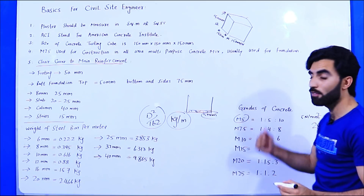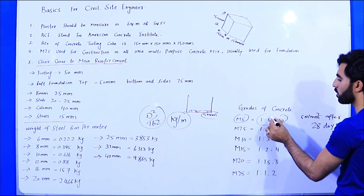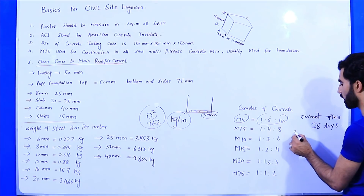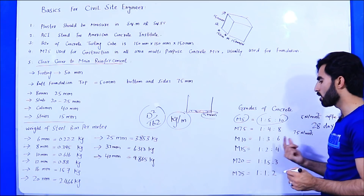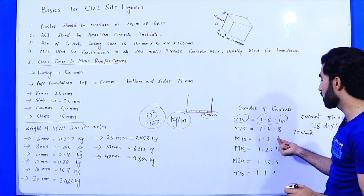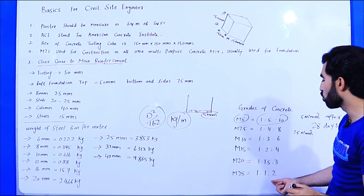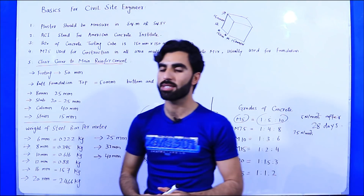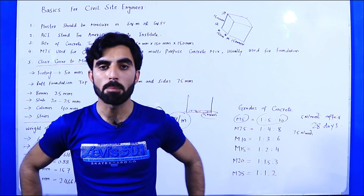To achieve a compressive strength of 5 N/mm² after 28 days (M5), the mix ratio is 1:5:10 — one part cement, five parts sand, ten parts crush. For M7.5: 1:4:8. For M10: 1:3:6. For M15: 1:2:4. For M20: 1:1.5:3. For M25: 1:1:2. Above M25, it is called design mix, requiring a specific design for the required grade.